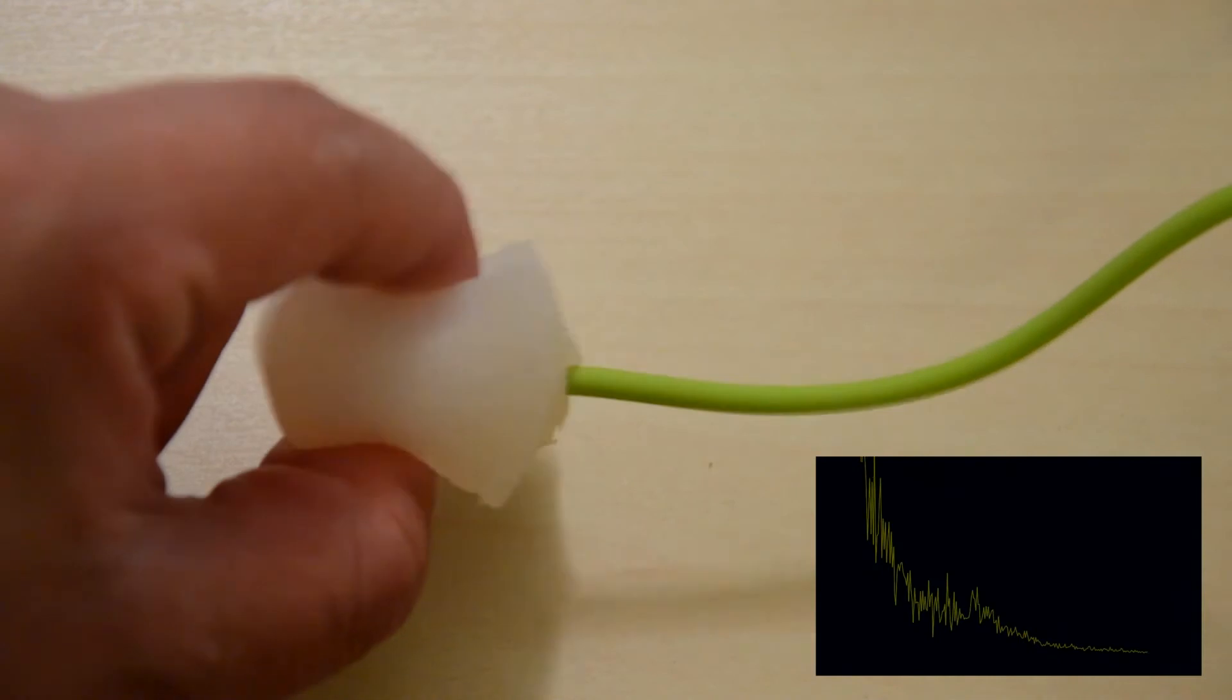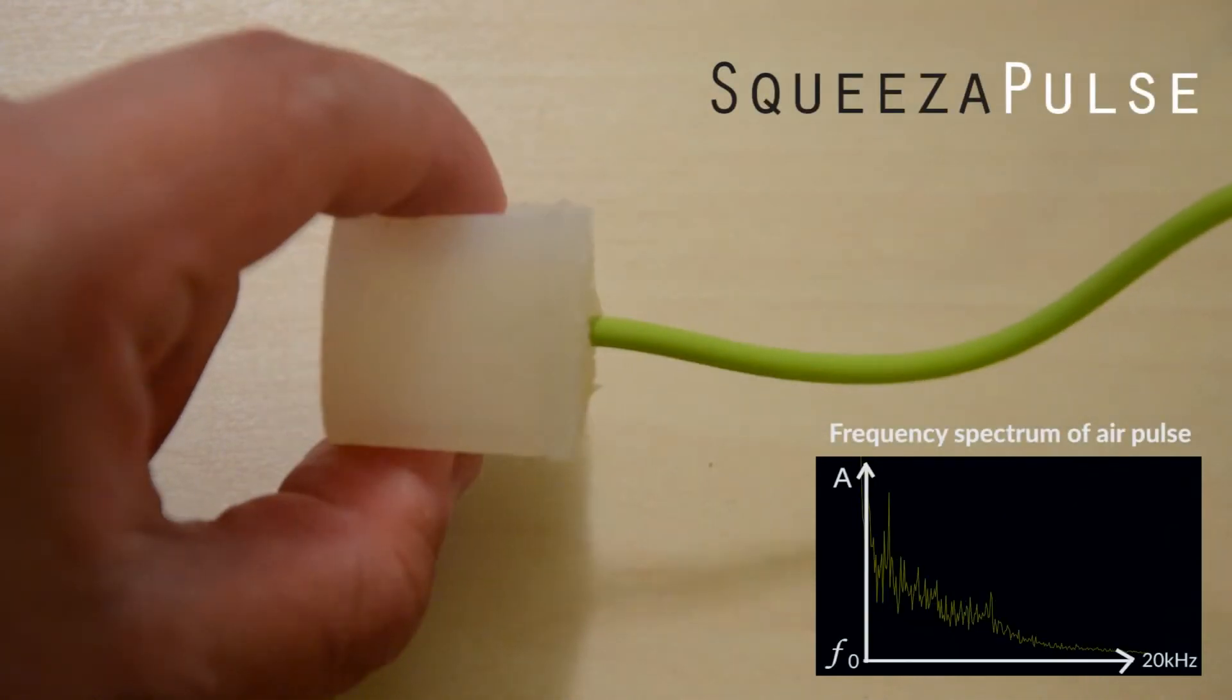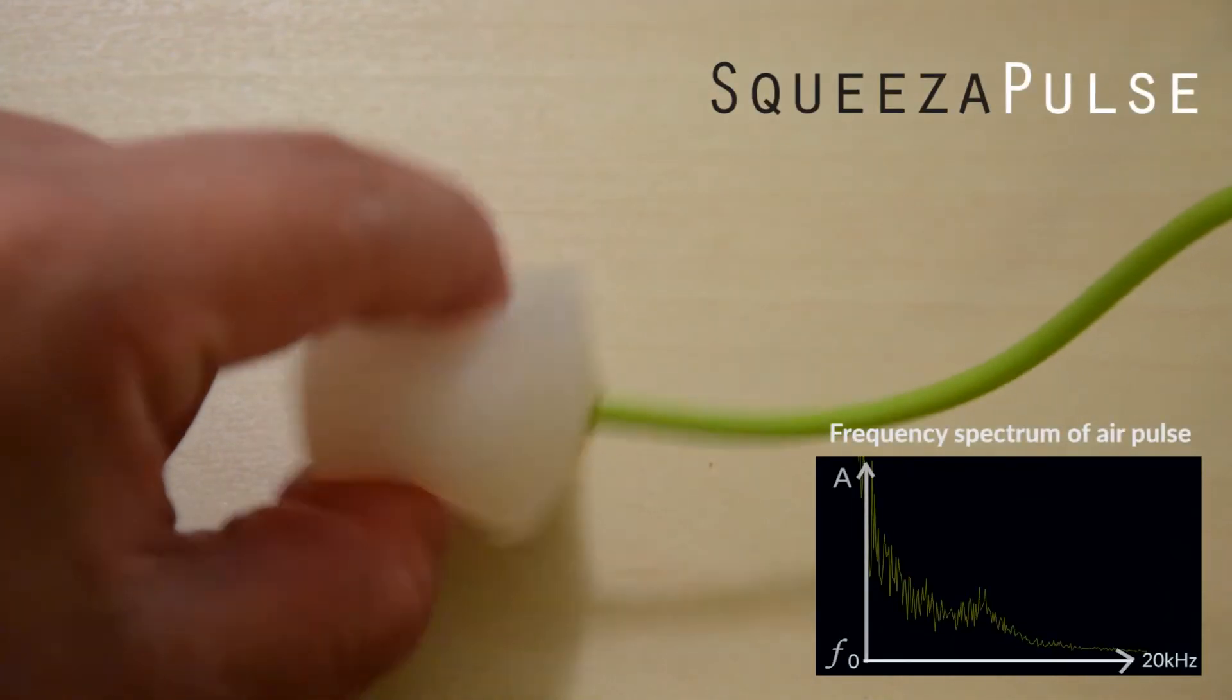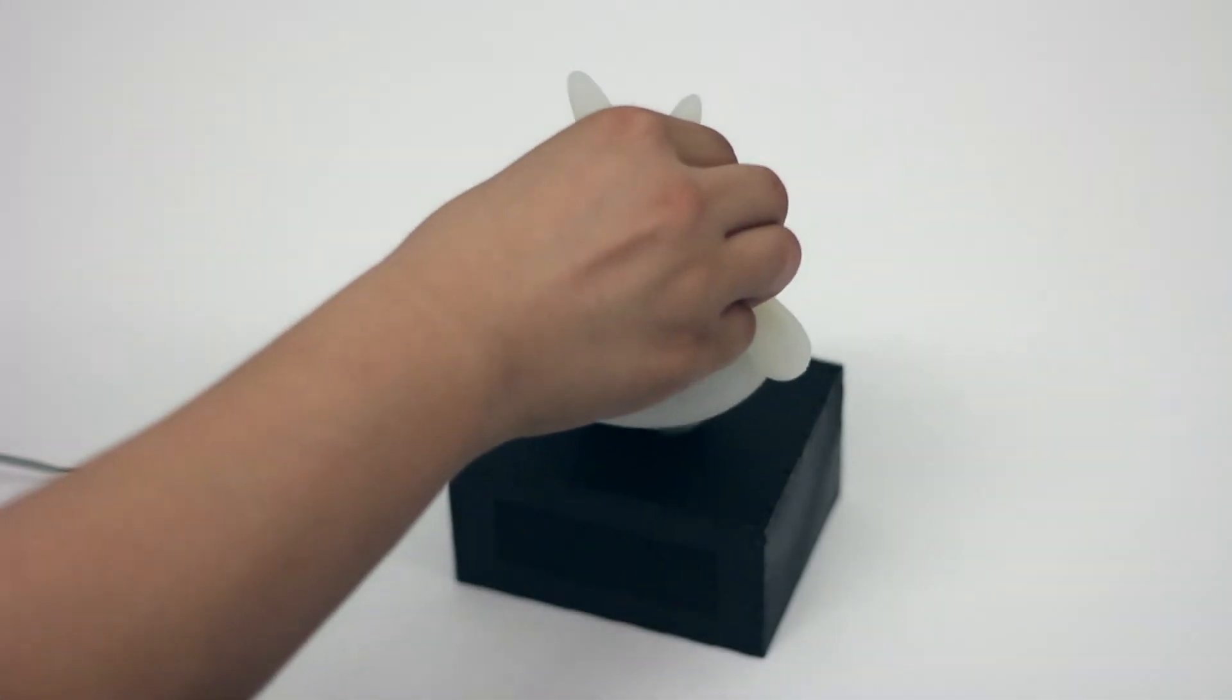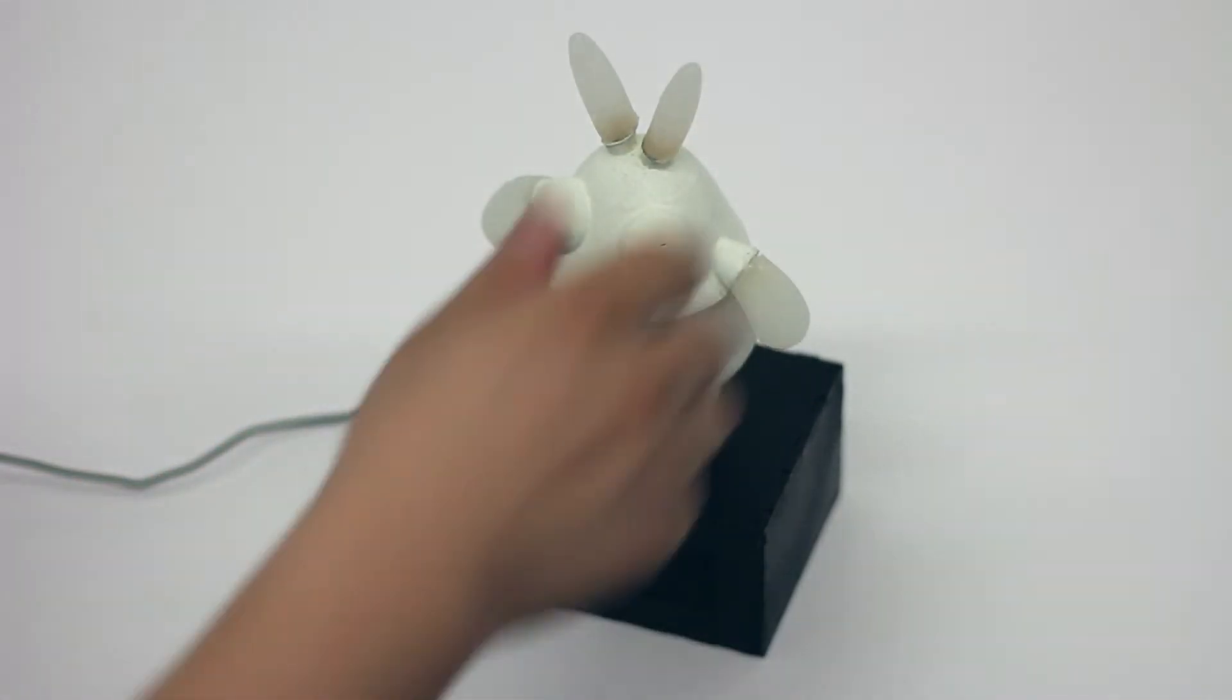We introduce Squeeze-a-Pulse, a technique for adding interactivity to fabricated objects using soft, passive, low-cost bellow-like structures.